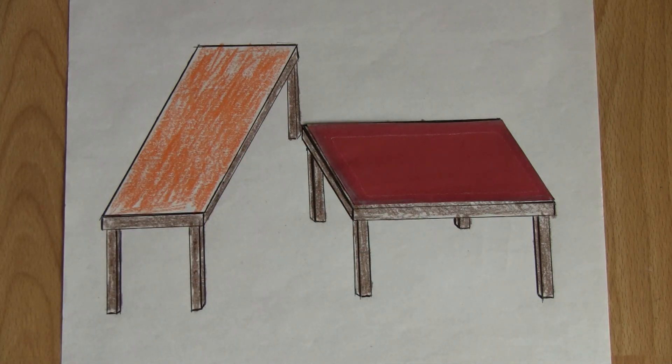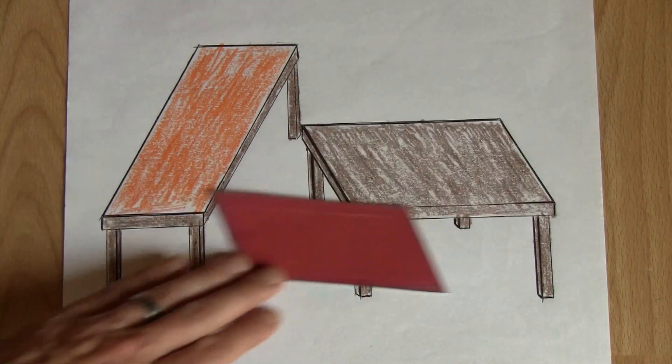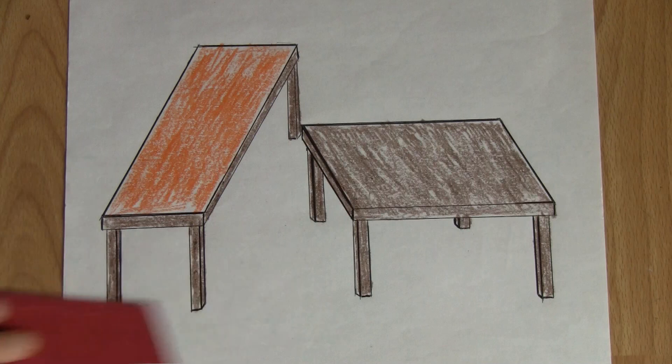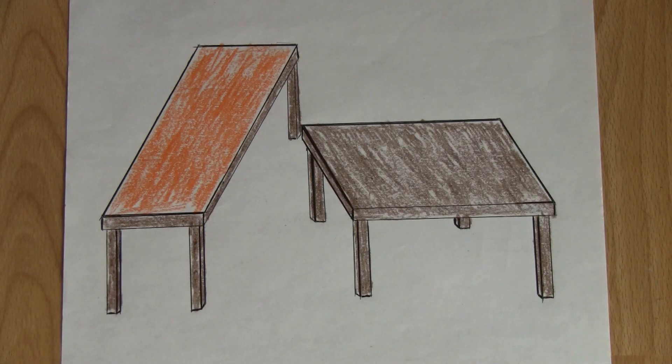This illusion tricks our eyes and brains because we are trained to see depth everywhere we go. Because we perceive things in a three dimensional world, we are used to split second perception in three dimensions. So seeing something on a two dimensional plane like this drawing takes advantage of our perception and causes the illusion that the two tabletops are completely different in size.